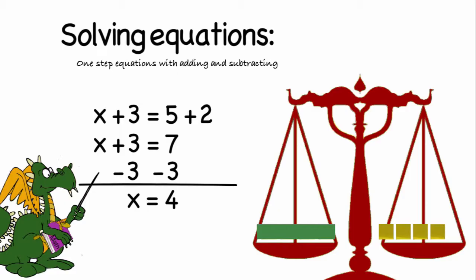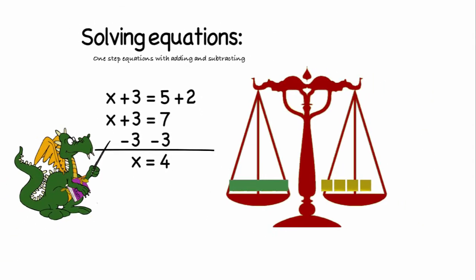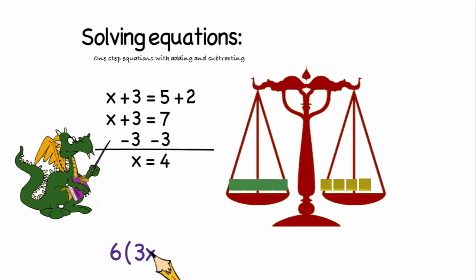I bet you're saying to yourself that seemed like a lot of work for something that was obvious. Well, what we're actually doing is providing you with the tools to help you solve more complex problems, such as 6 times the quantity 3x plus 5 equals 3 fourths x plus 16.